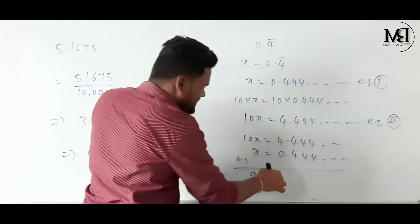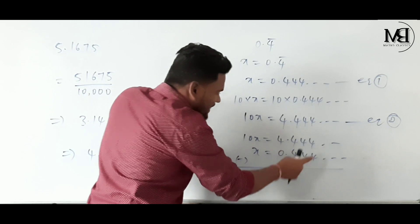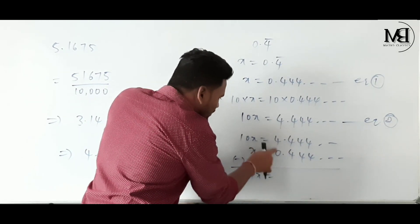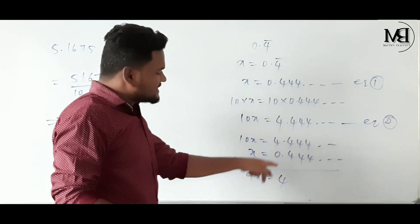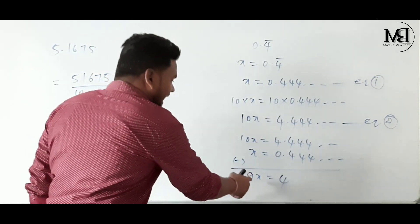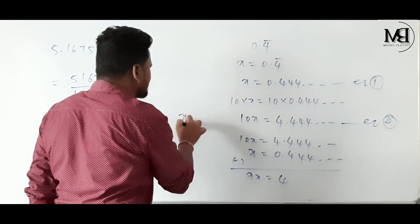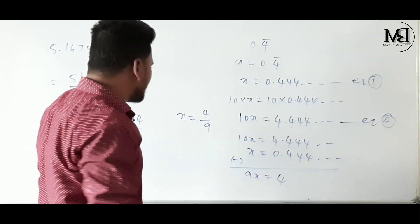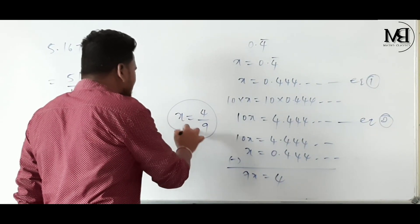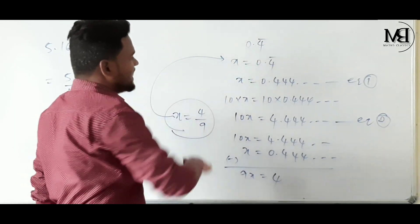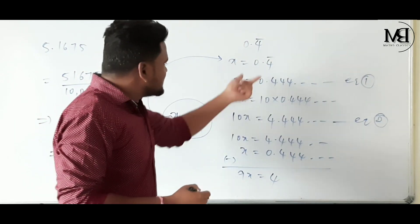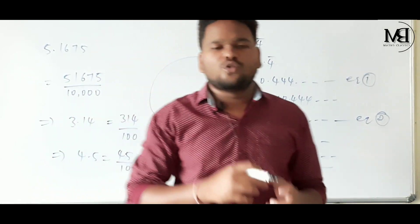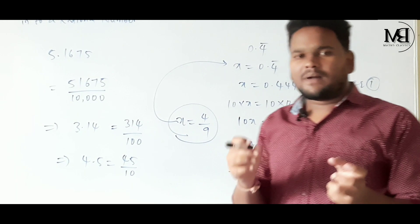9X equals: the decimal parts cancel — 4 minus 4 is 0, 4 minus 4 is 0, and the whole part 4 minus 0 is 4. So 9X = 4, which means X = 4 by 9. Since X is 0.4 bar, we have 0.4̄ = 4/9. That is the conversion.